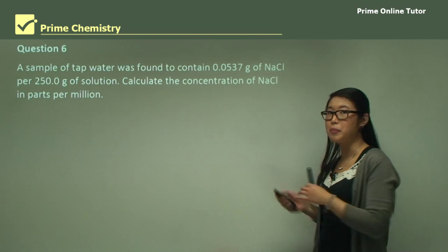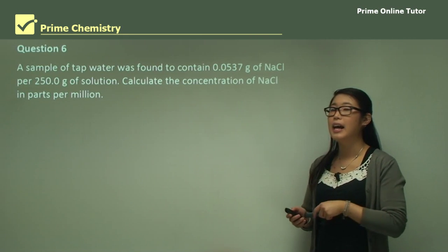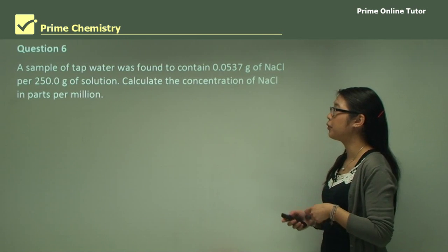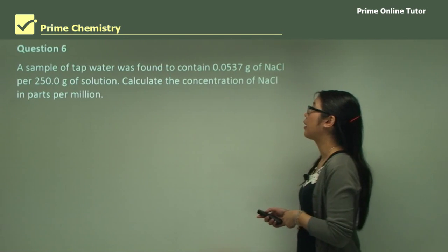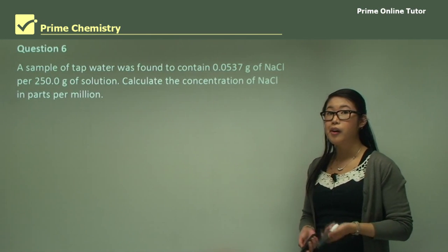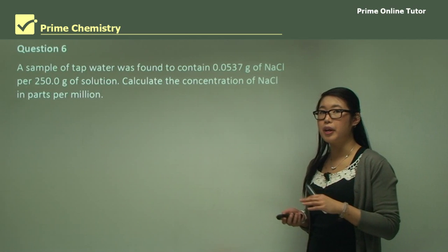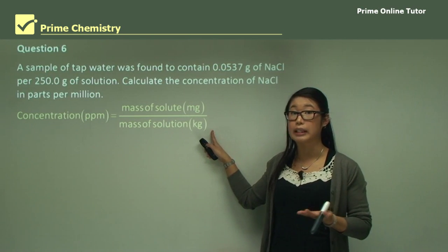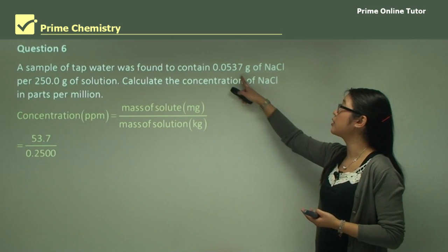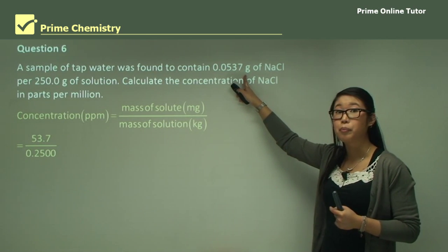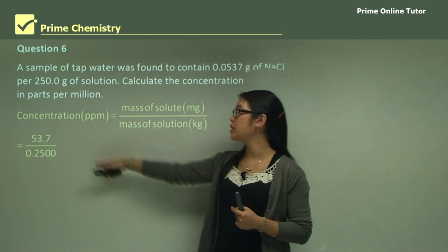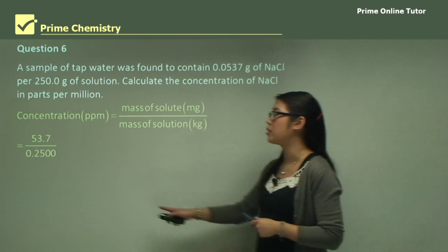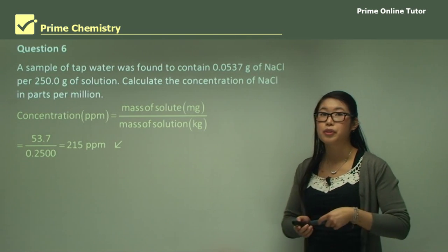Question six: a sample of tap water was found to contain 0.537 grams of sodium chloride (NaCl) per 250 grams of solution. Calculate the concentration in parts per million. Parts per million is milligrams per kilogram. So we convert 0.537 grams to 537 milligrams, and 250 grams to 0.25 kilograms. Calculating gives us 215 parts per million.